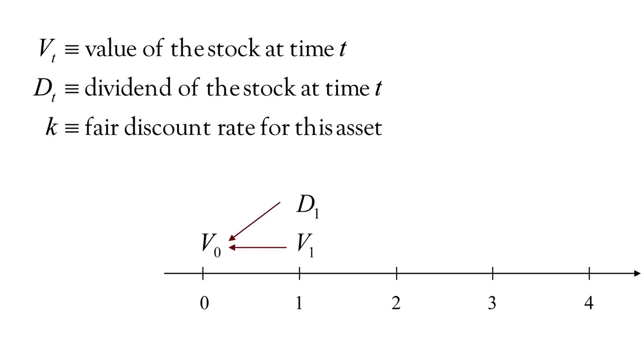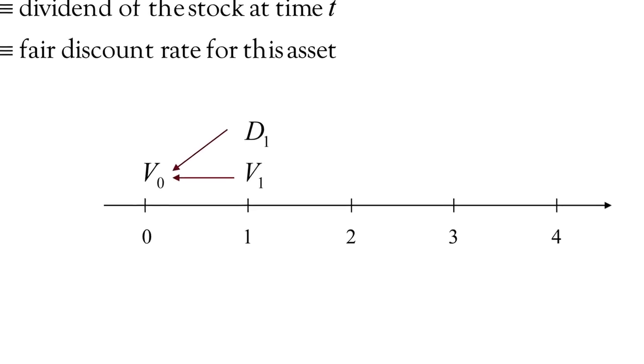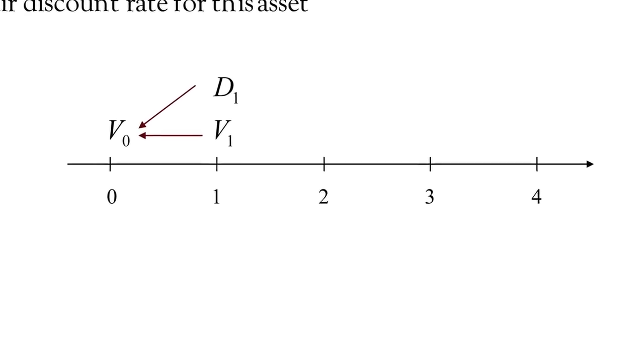Let's look at that on a timeline. Let the value of the stock be denoted by V sub T. Let the dividend be denoted by D sub T, the dividend at time T, and K is going to represent our discount rate. In another video, we'll discuss how that discount rate is calculated.